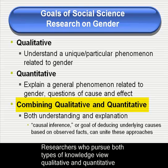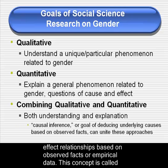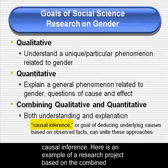Researchers who pursue both types of knowledge view qualitative and quantitative research as being fundamentally similar, in that they both involve uncovering cause and effect relationships based on observed facts or empirical data. This concept is called causal inference.